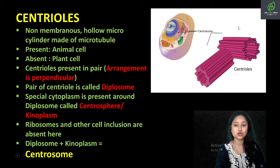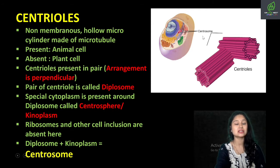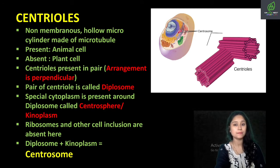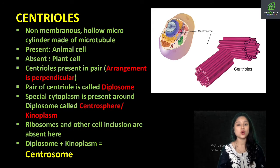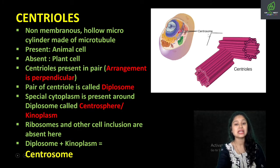Diplosome, that is the pair of centrioles, along with the centrosphere aur kinoplasm, together form a structure which is known as centrosome. So to summarize: centrioles pair mein present hain, isliye diplosome kaha. In ke aas paas cytoplasm present hai, that is kinoplasm aur centrosphere. Centrosphere aur diplosome together constitute centrosome, and these structures are seen in animal cells while they are absent in plant cells.